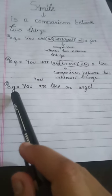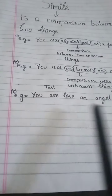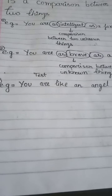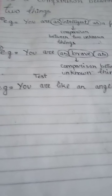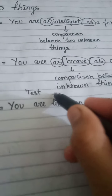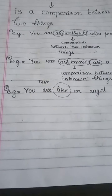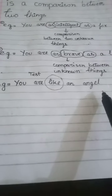Now this is a test for you. Example number three: 'You are like an angel.' Which word is used in simile here? The answer is 'like' — 'like' is the simile word used here. This is a comparison between a human being and an angel.